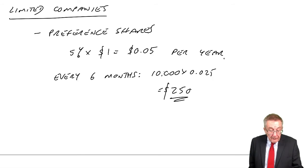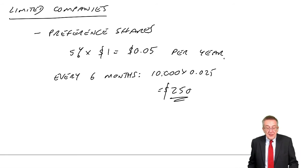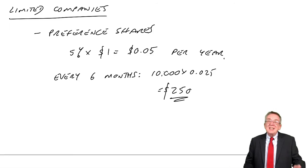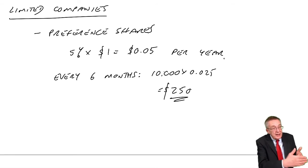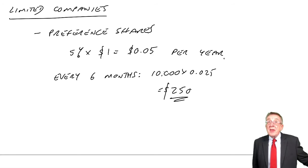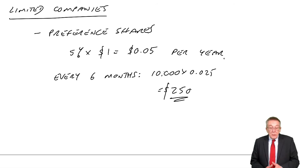Now, the one other thing is you'll see below, preference shares can be either redeemable or irredeemable. Now, redeemable means repayable. So these shares, they might have 5% preference shares, that are repayable in 10 years' time. So they'll get the dividend every year, then in 10 years, they'll get the cash back. Or, they can be what we call irredeemable, which means they'll carry on getting a dividend each year, but they'll never get the shares repaid.